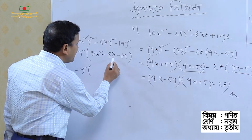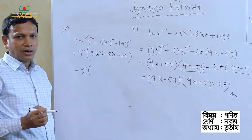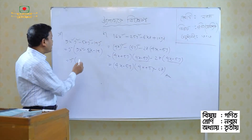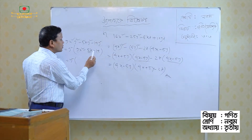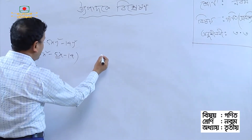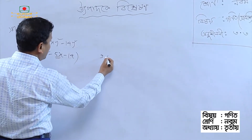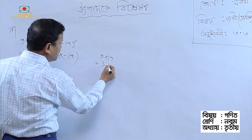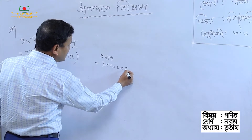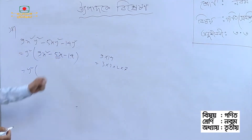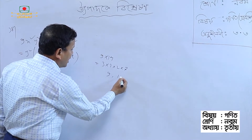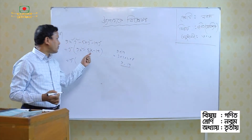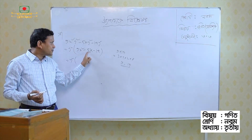The middle term break for 5x: we have 9x squared and 14y squared. For the middle term break, 9 into 14 gives us 126. We need factors: 3 into 3 is 9, and 2 into 7 is 14. So 9 plus 14 equals 23, but we need minus 5.